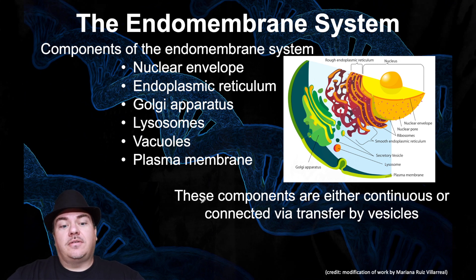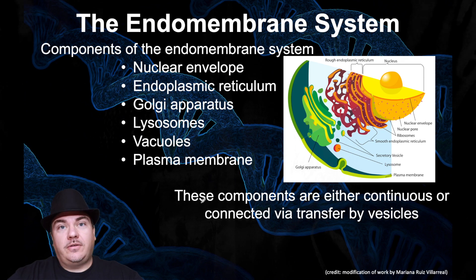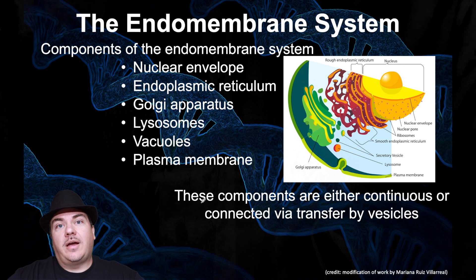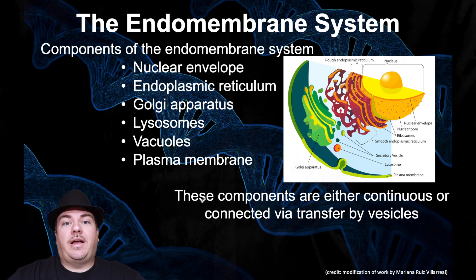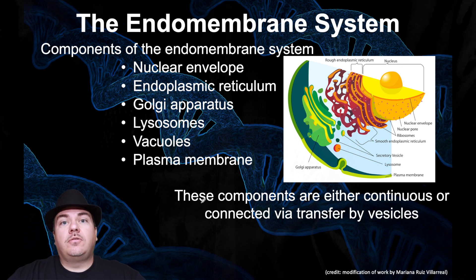So the endomembrane system is made up of the nuclear envelope that we've already discussed, the endoplasmic reticulum, the Golgi apparatus, lysosomes, vacuoles, and the plasma membrane. And we're going to go through those one by one.